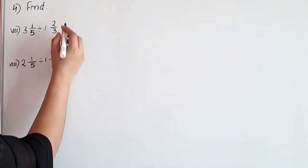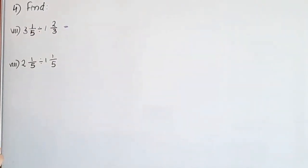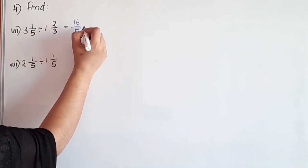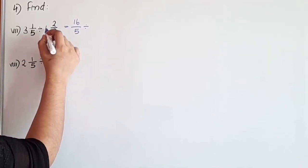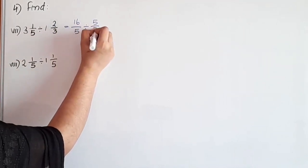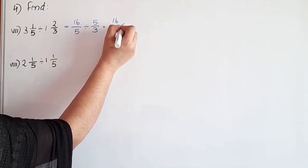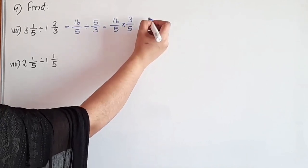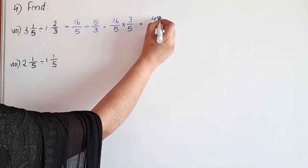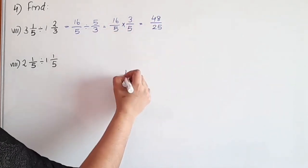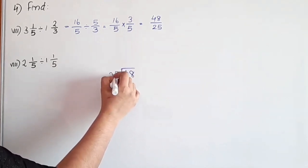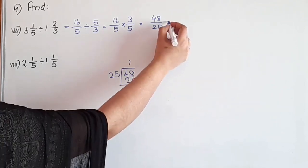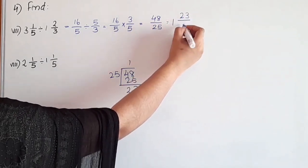Next question: 3⅕ divided by 1⅔. Both are mixed fractions, convert to improper. 5 into 3 is 15, plus 1 is 16, so 16/5. Then 1 into 3 is 3, plus 2 is 5, so 5/3. Now 16/5 divided by 5/3: reciprocal of 5/3 is 3/5. Equal to 16 into 3 is 48 by 25. Convert: 48 divided by 25, 1 time is 25. 48 minus 25 is 23. Answer is 1 and 23/25.